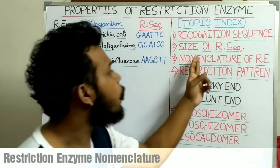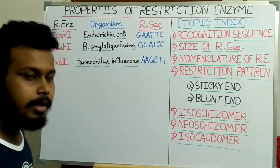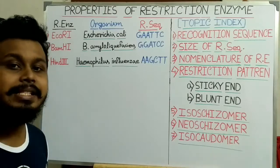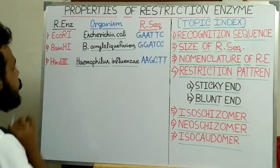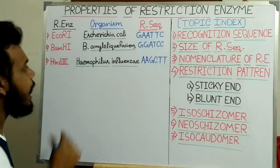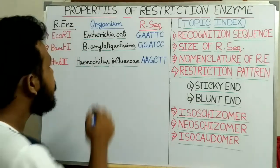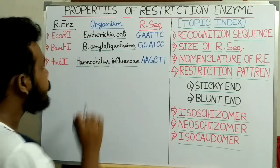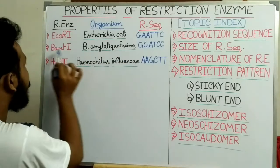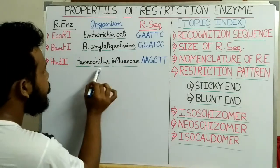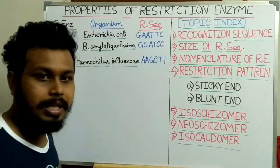I will discuss the nomenclature of restriction enzymes. Here three different restriction enzymes are present: EcoRI, BamHI, and HindIII. The organisms from which these restriction enzymes are isolated are Escherichia coli for EcoRI, Bacillus amyloliquefaciens for BamHI, and Haemophilus influenzae for HindIII. These are the recognition sequences for these restriction enzymes.